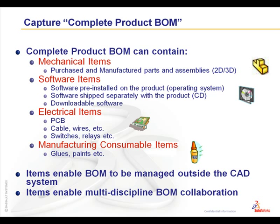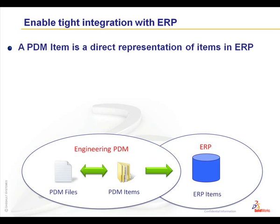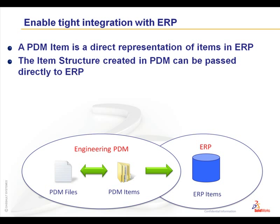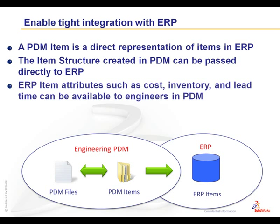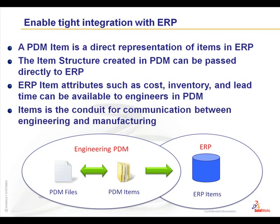The item approach is not for every company, but if you need an interface with an ERP system, Enterprise could be your easy-to-use window to a traditionally cumbersome platform. An Enterprise PDM item is a direct representation of those items in your ERP system. The item structure can be created in PDM and passed directly to the ERP. ERP attributes can easily be made available to engineers. Items are really the means of communication between engineering and manufacturing.